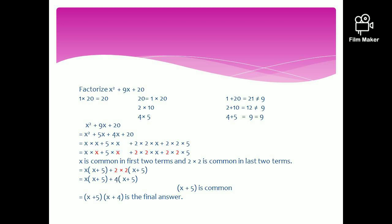Now write 9x as 4x plus 5x, or 5x plus 4x — the sequence is not important. Therefore, x squared plus 9x plus 20 breaks into the 4-term expression x squared plus 5x plus 4x plus 20. x is common from the first two terms and 4 is common from the next two. This gives x times x plus 5 plus 4 times x plus 5. Taking x plus 5 out, the final answer is x plus 5 times x plus 4.